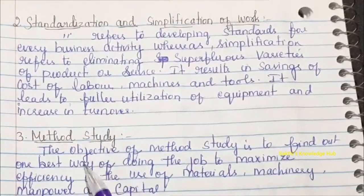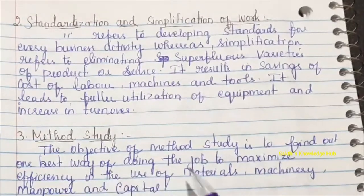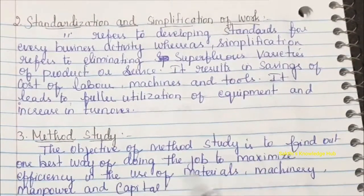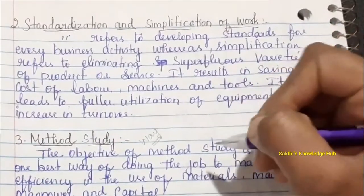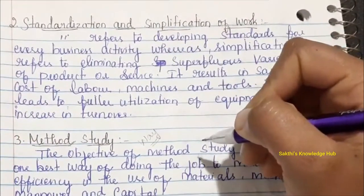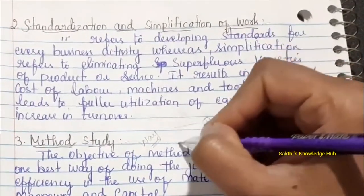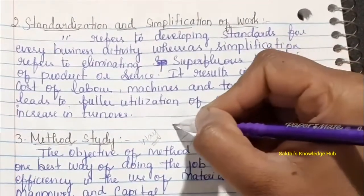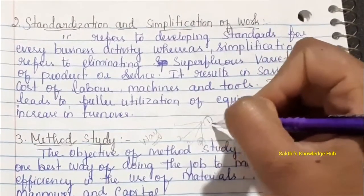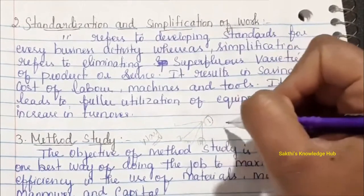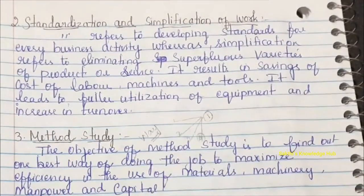The third technique is Method Study. The objective of method study is to find the one best way of doing a job to maximize efficiency in the use of material, machinery, manpower, and capital. For example, to produce a finished product, an organization may have many options — they must analyze each and select the method best suited to finish production and achieve maximum profit. These methods will be studied in detail in the productions and material management subject.